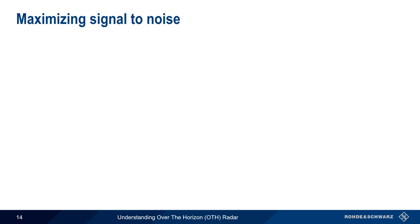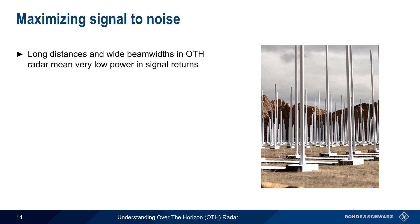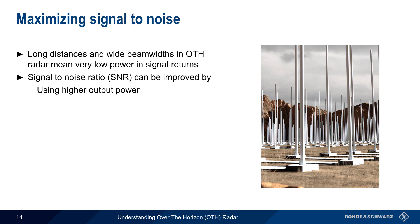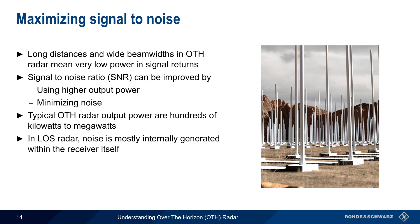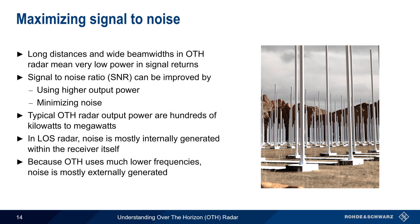The long distances and wide beam widths used in over-the-horizon radar mean that target returns are often very low power, and hence a high signal-to-noise ratio is advantageous. SNR can be improved by using higher output power or by minimizing the amount of received noise. Since typical OTH radar output power is already on the order of hundreds of kilowatts to megawatts, noise reduction is the most common method used to improve SNR. In traditional line-of-sight radars, most noise is generated internally within the radar receiver itself. But in most over-the-horizon radars, the majority of noise comes from external sources, such as man-made noise, lightning, and cosmic noise.